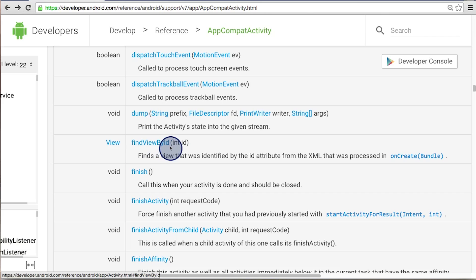In the AppCompatActivity class, I want to show you a specific method. It's called FindViewById, and it takes as input a resource ID. The FindViewById method finds a view that corresponds with the ID that is passed as an input, and the activity searches for this view in the view hierarchy from the XML that was processed in the onCreate method.